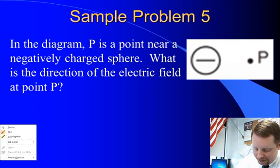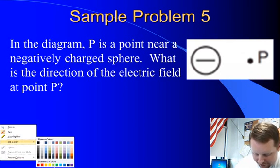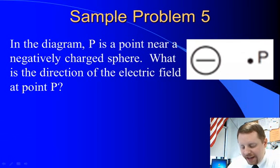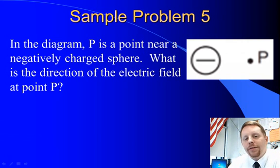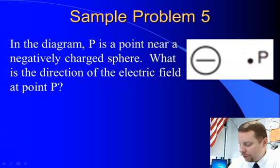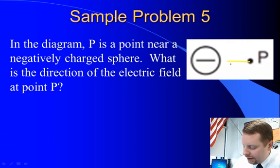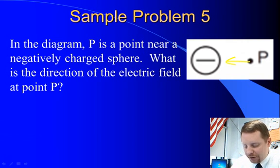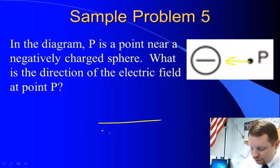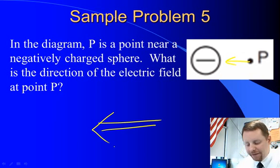Sample problem five: P is a point near a negatively charged sphere. What is the direction of the electric field at point P? The electric field shows the direction a positive charge would feel a force. If P were a positive charge, it would be attracted toward that negative charge, so the direction of the electric field at point P is to the left.